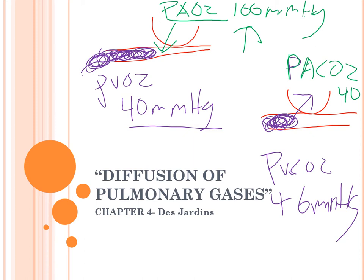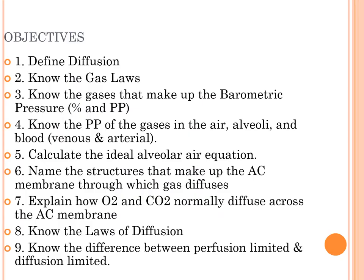We're going to be looking at passive diffusion between areas reaching equilibrium. Make sure you know the definition of diffusion — I will ask this on the exam. Know your gas laws; this should be review from science class: Boyle's, Gay-Lussac's, Charles, Dalton's Law. We'll also go over Graham's, Fick's, and Henry's laws. I will expect you to know those. I also want you to know the gases that make up barometric pressure — their percentages and partial pressures.